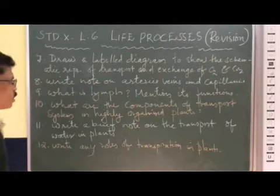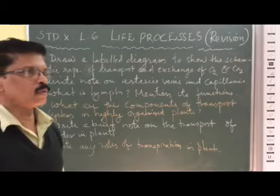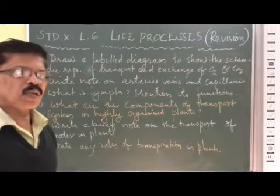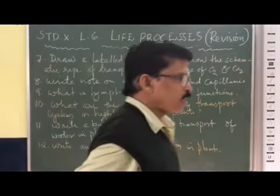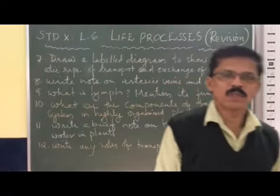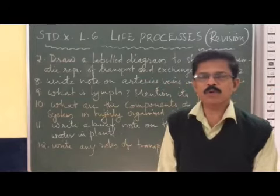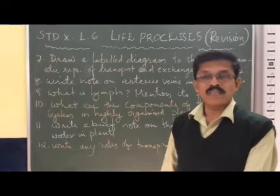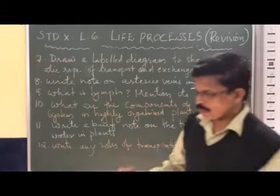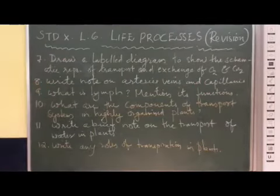What are the components of the transport system in highly organized plants? In highly organized plants, xylem and phloem are the transporting components. Xylem consists of vessels and tracheids — these vessels and tracheids maintain a continuous water column through the xylem in plants. The phloem transports prepared food, and mainly contains sieve tubes and companion cells to transport the prepared food.